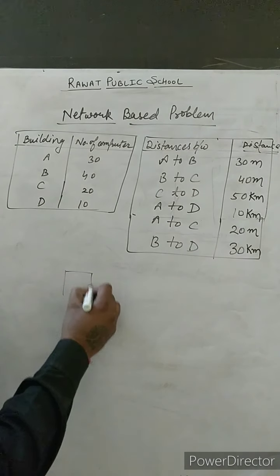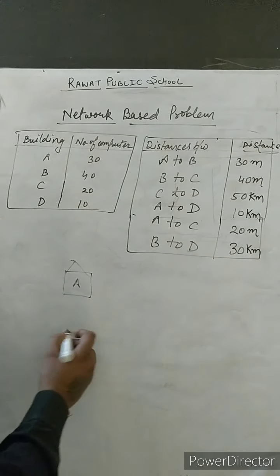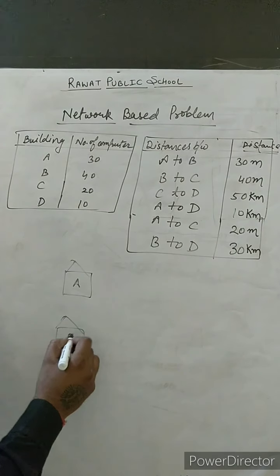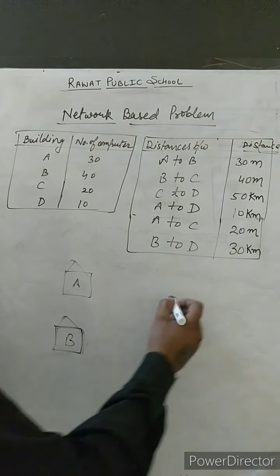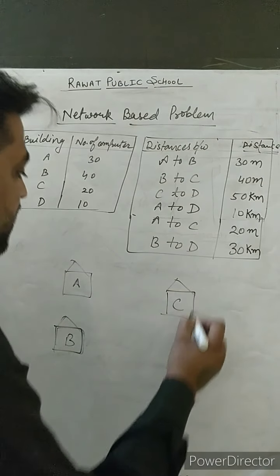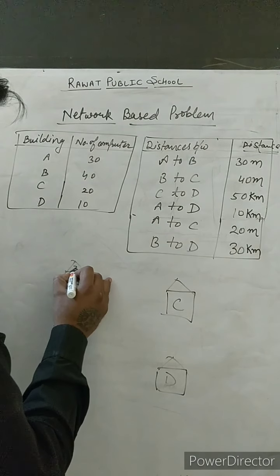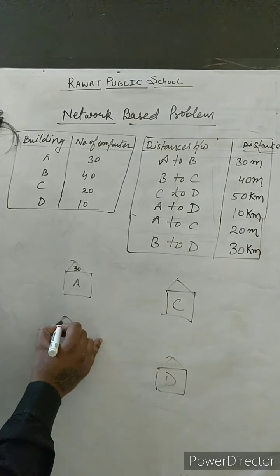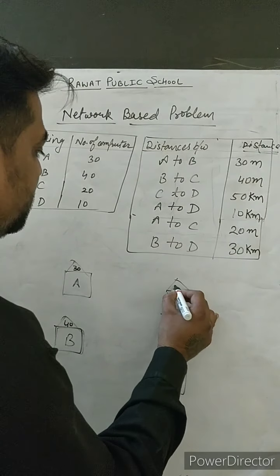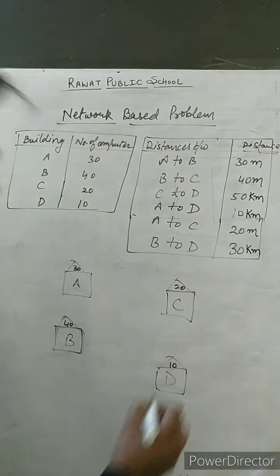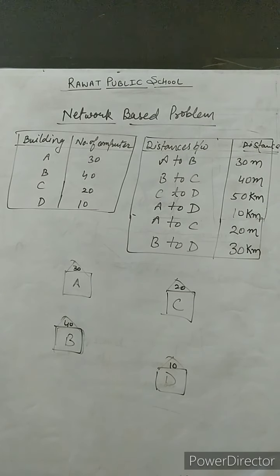Let's start by making a rough layout. Draw building A, building B, building C, and building D — these four buildings. Now mention the number of computers in each building: A has 30, B has 40, C has 20, and D has 10 computers.